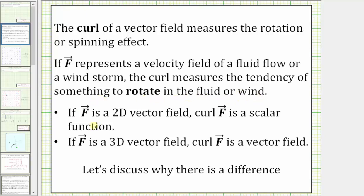If the vector field f is a two-dimensional vector field, the curl of f is a scalar function. But if the vector field f is a three-dimensional vector field, then the curl of f is another vector field. Let's discuss why there is a difference.